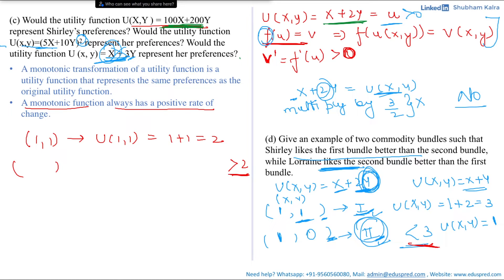We cannot just choose adjacent numbers like (1,1) and (1,0), where we've only reduced very little. We need to take bigger numbers to create more margin. The reason I showed that first attempt was to help you understand how to think and come up with an example that satisfies both conditions. So instead of keeping y as 1, let's make it 3 or 4.